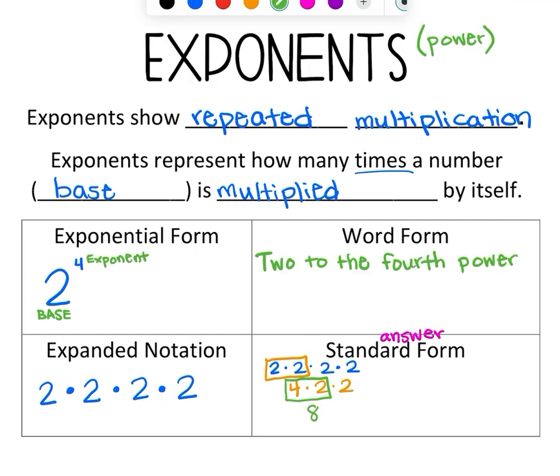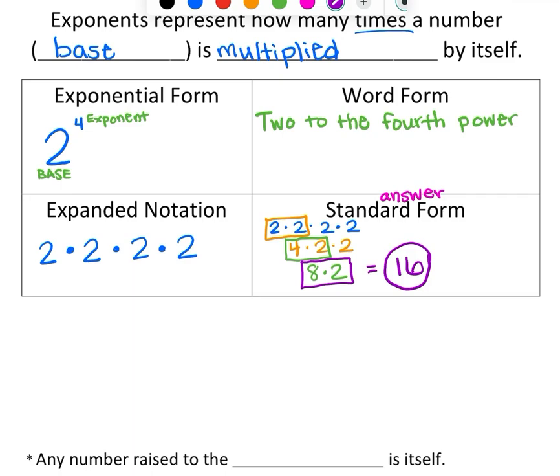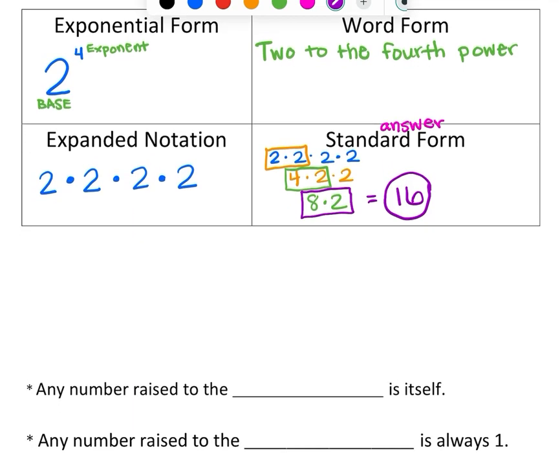So 4 times 2 is 8. And then I still have a times 2, so I need to bring it down. And then we can finally solve that last bit, which is 8 times 2, and that equals 16. So our final answer is 16. So write it in expanded notation and then multiply two numbers at a time.